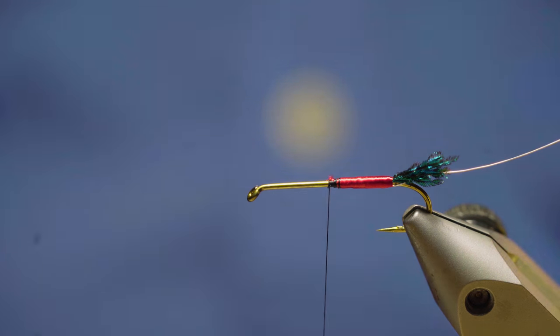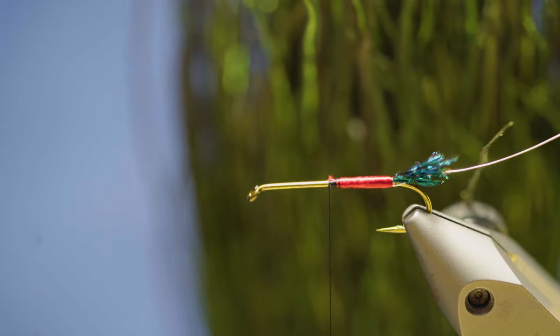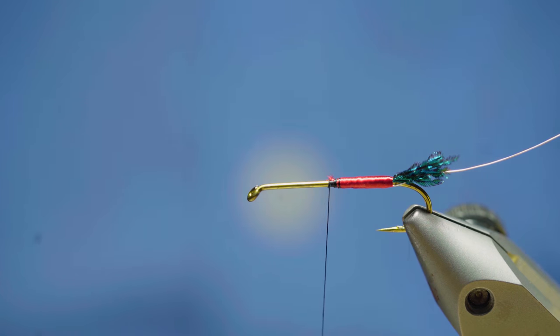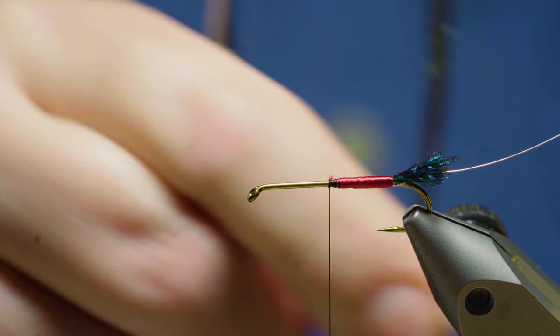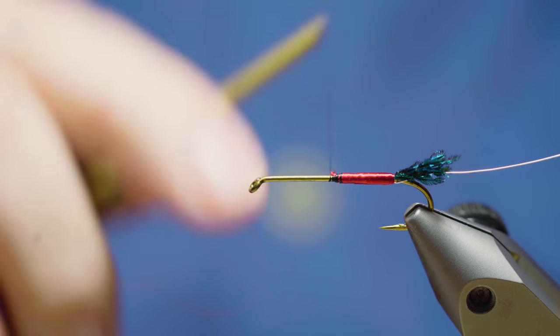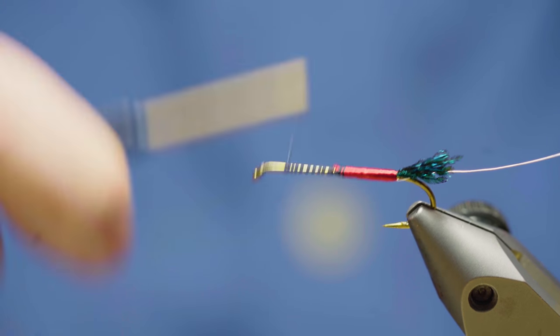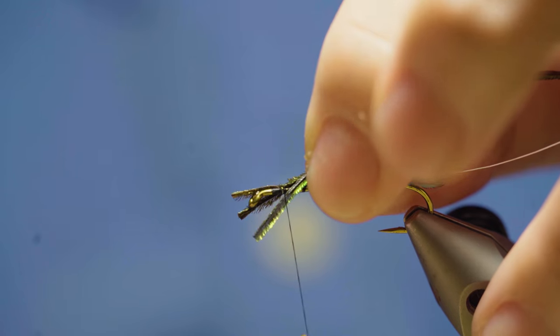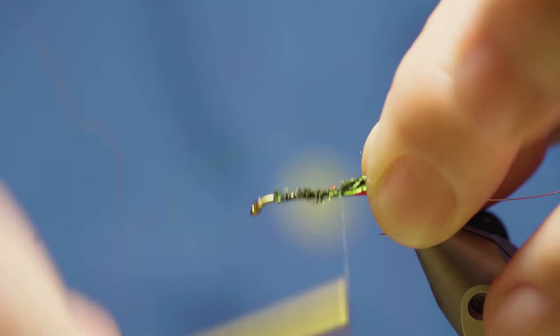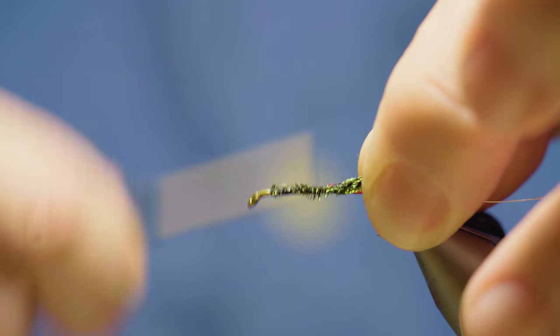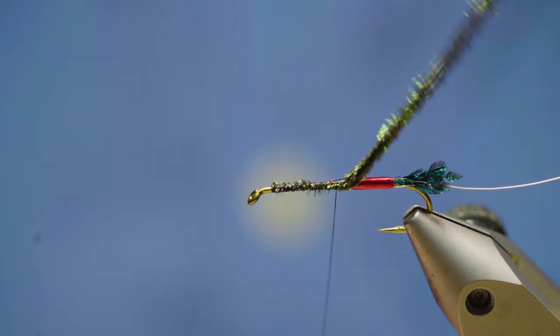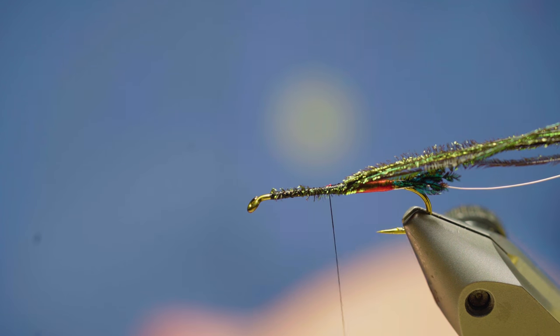So next we're going to tie in our peacock herl and if you take your patch of peacock herl and you grab the tips and you pull from the patch out of the bag you'll get these longer fibers. I'll just trim the tips off of these so they're nice and even. I'm going to come up the body leaving enough space for my hackle in the front and get this started. And that way I get a fairly smooth body as I come back wrapping over that. Yeah, that's about right.